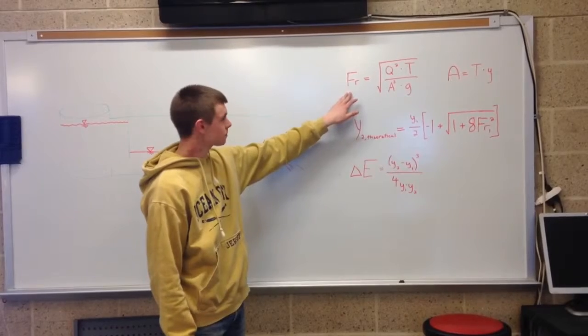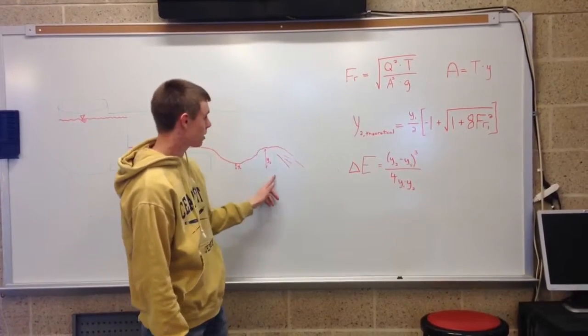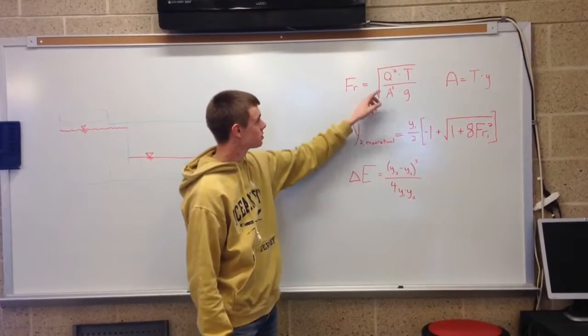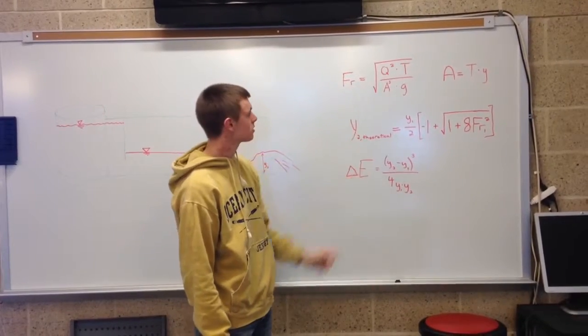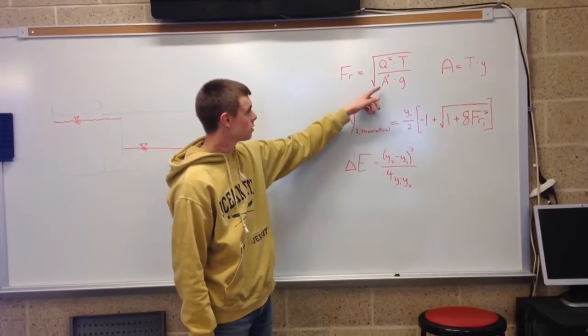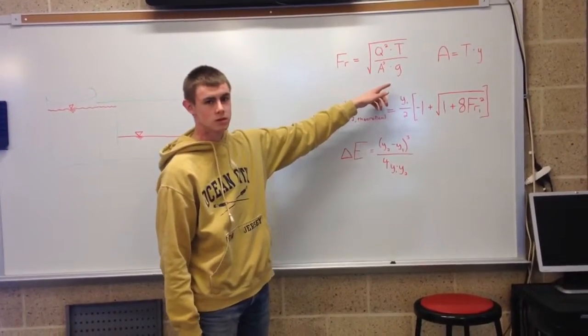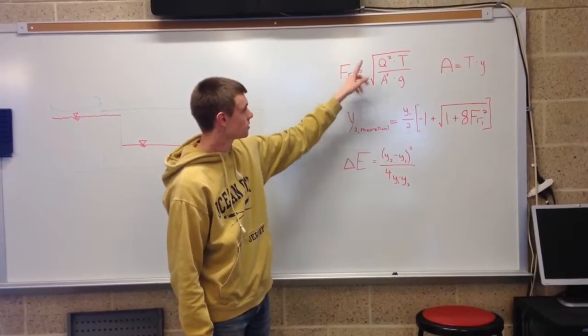And to find the Froude number, you want to find it for both y1 and y2, Froude number 1 and Froude number 2. So this is the equation: flow rate squared times T over A cubed times gravity, all that squared.